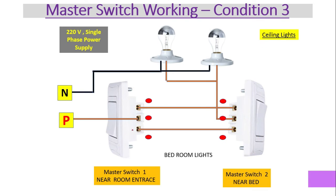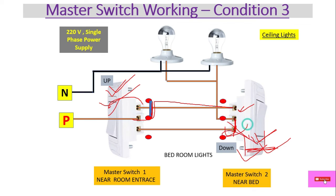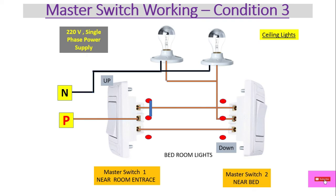Condition three: the first switch is in the up position and the second switch is in the down position. Power from the first switch travels through the upper contact, but the second switch's down position contacts a terminal where no power is present. So power is not reaching the common terminal of the second switch, and both lights are off.